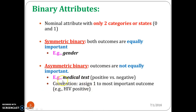Only a very negligible number of people will have HIV positive. So here the ratio is not equal — the occurrence of 1s and 0s is not equal. Hence, the medical test is an example of an asymmetric binary attribute.